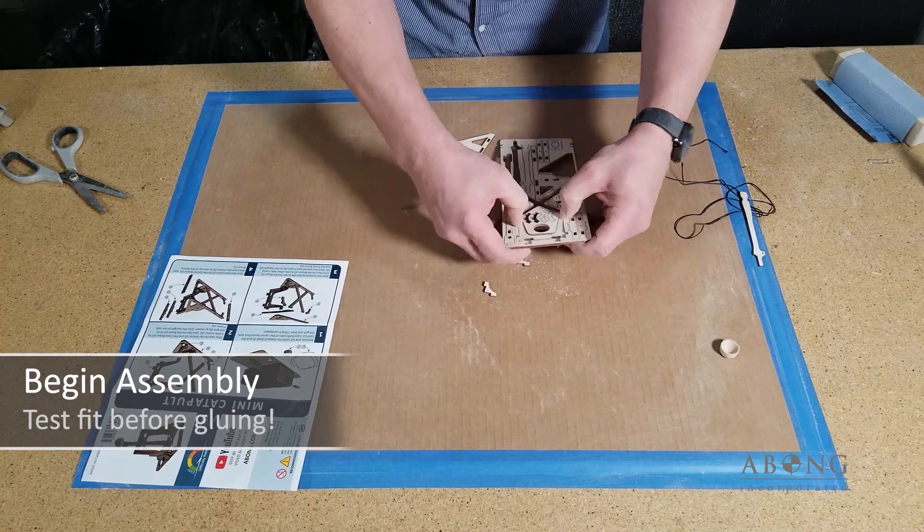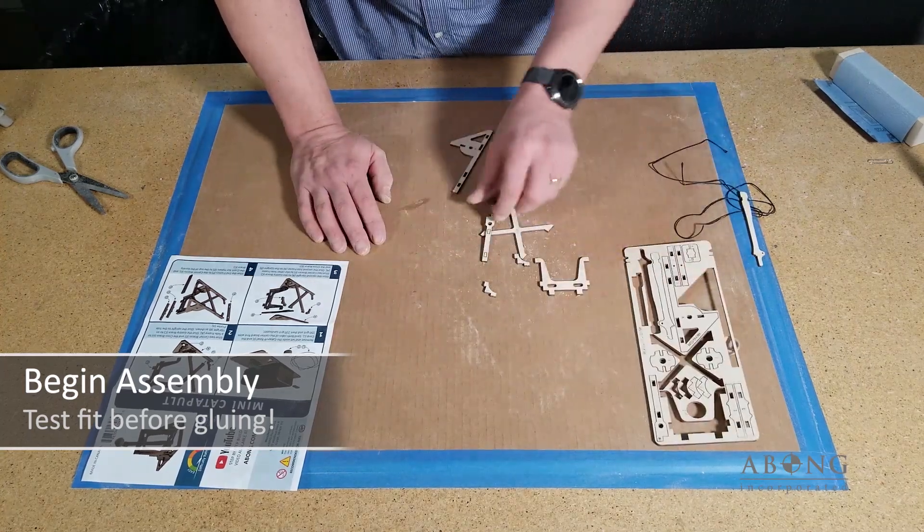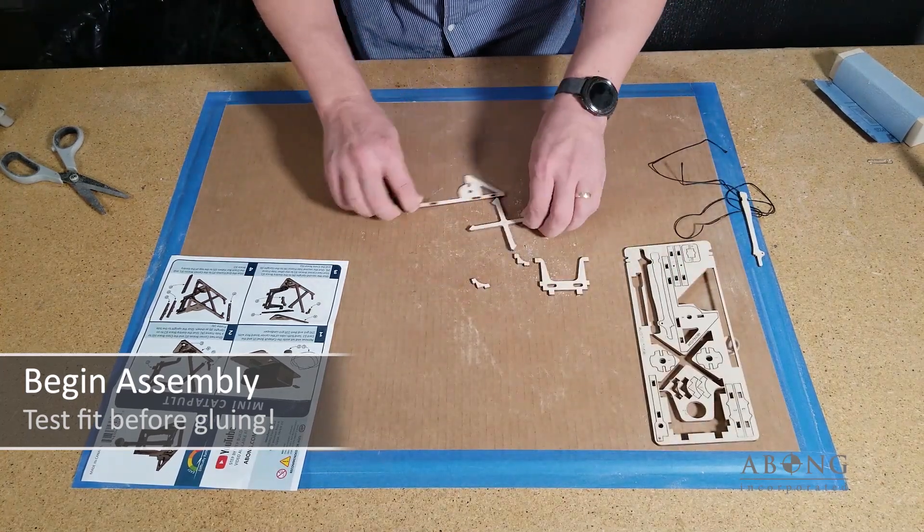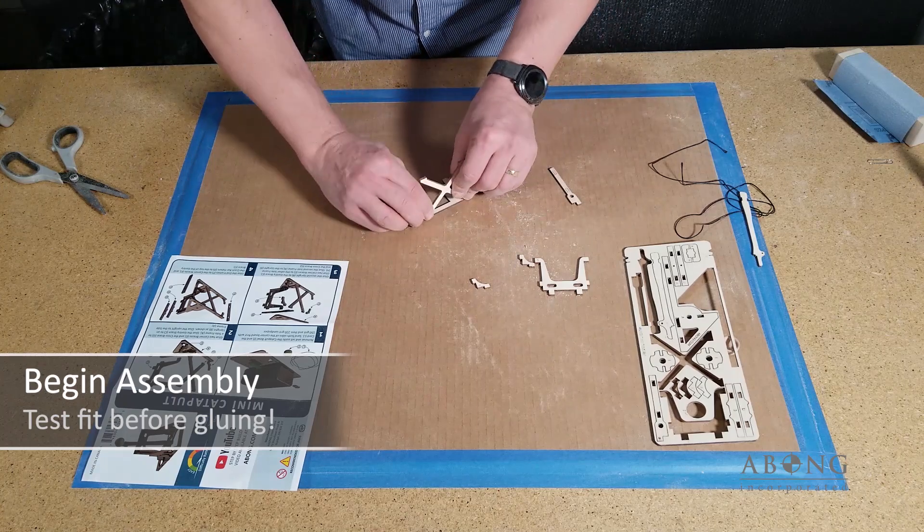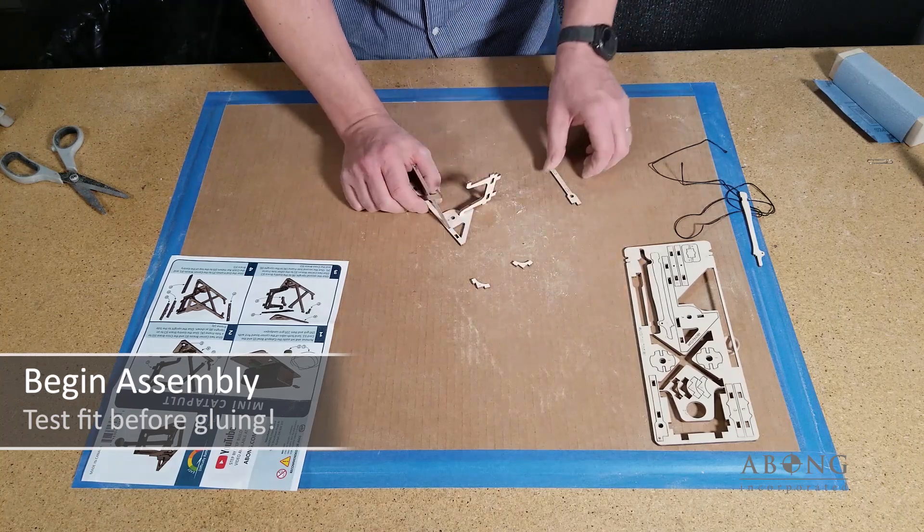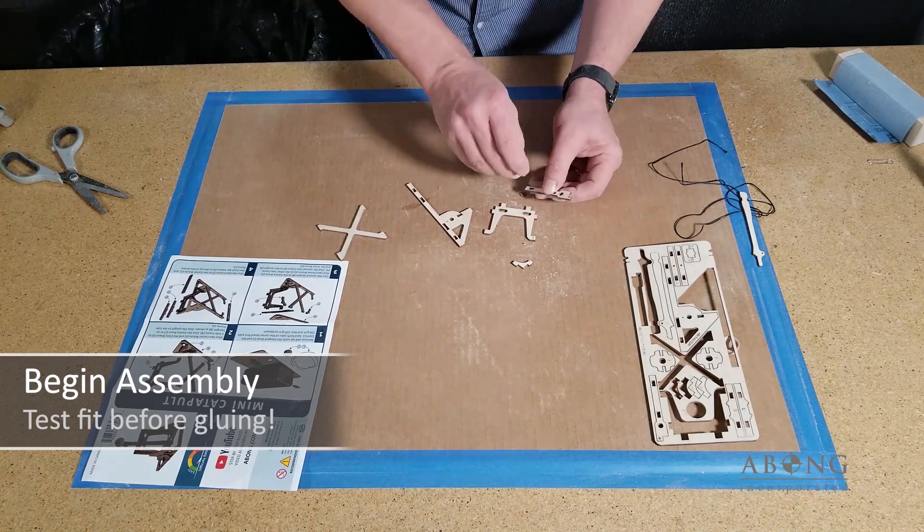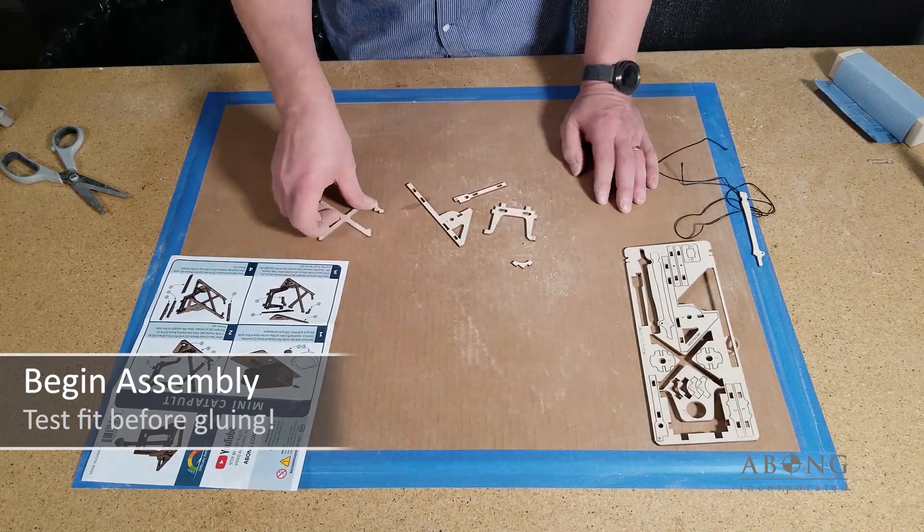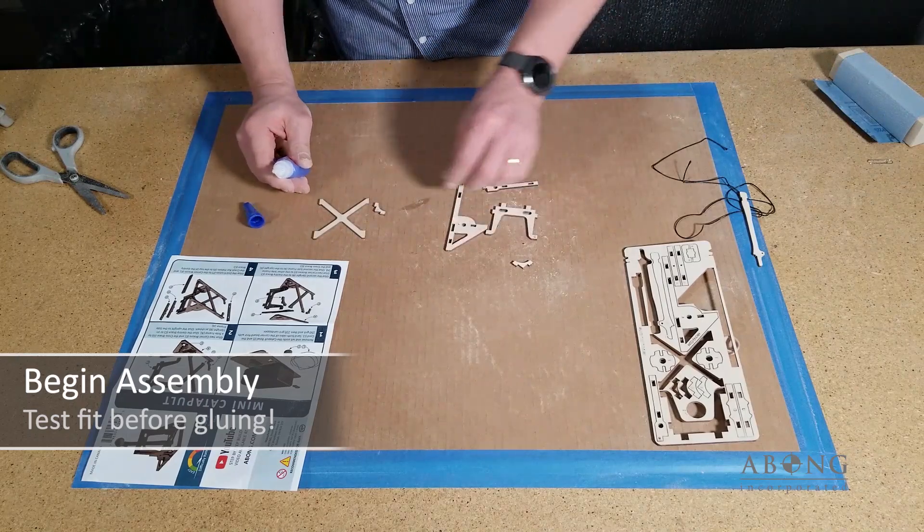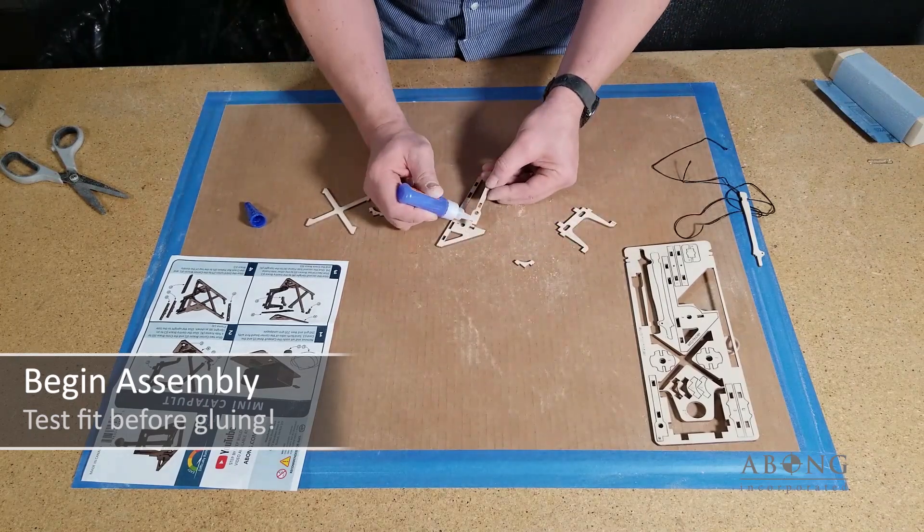So I'm popping out the cross pieces here, the gantry, and each of the pieces you just want to check to make sure that they all fit together before you add the glue. So just do a quick check, make sure that all the slots are the right size and everything fits together. It should but it's better to find out before you apply glue and get into some trouble.